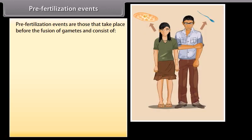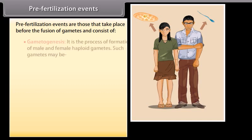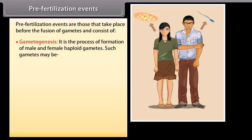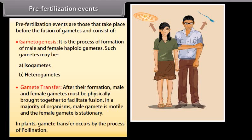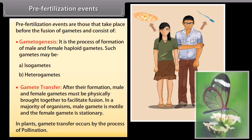Pre-fertilization events are those that take place before the fusion of gametes, and consist of gametogenesis — the process of formation of male and female haploid gametes, which may be isogametes or heterogametes — and gamete transfer. After their formation, male and female gametes must be physically brought together to facilitate fusion. In plants, gamete transfer occurs by the process of pollination.